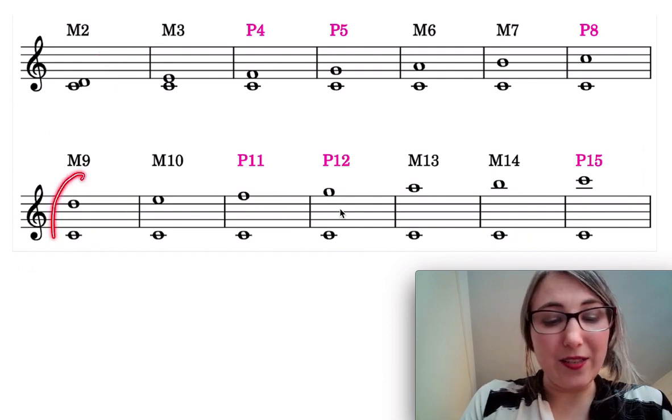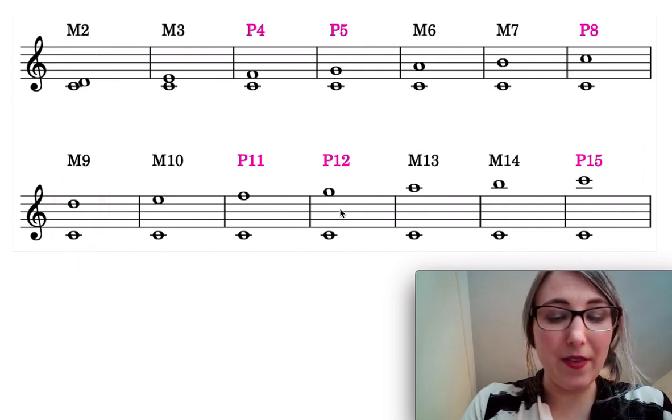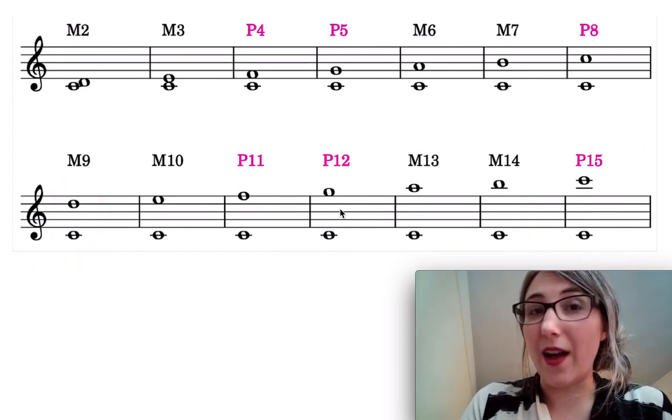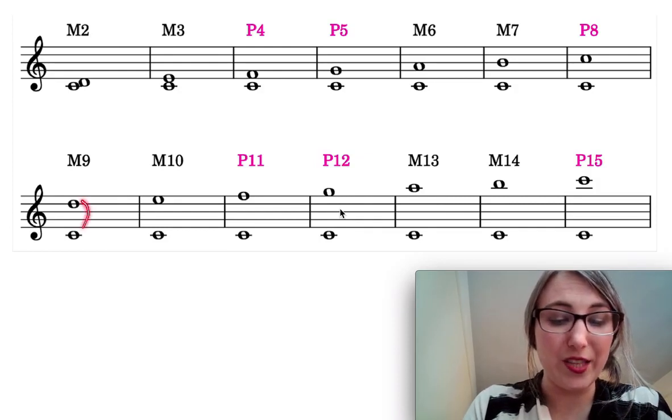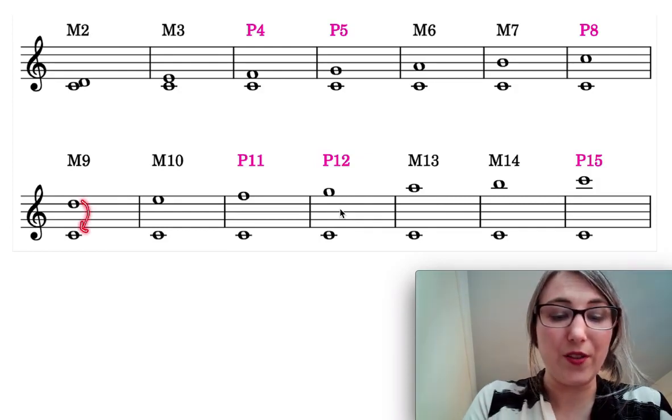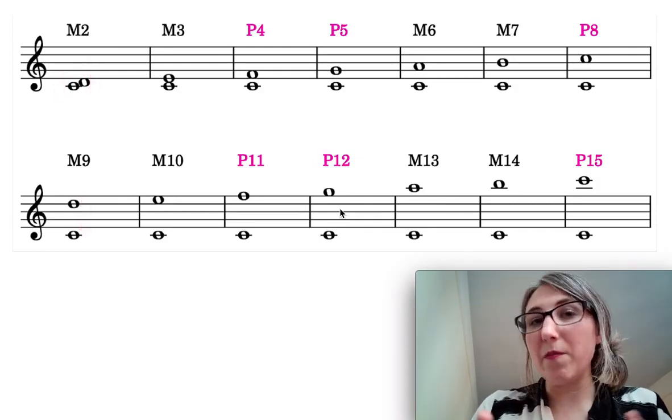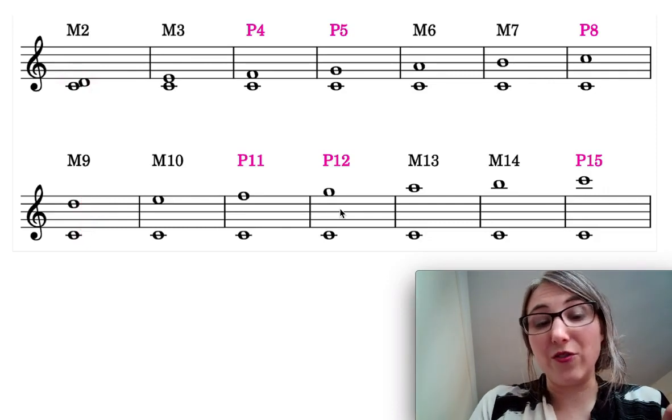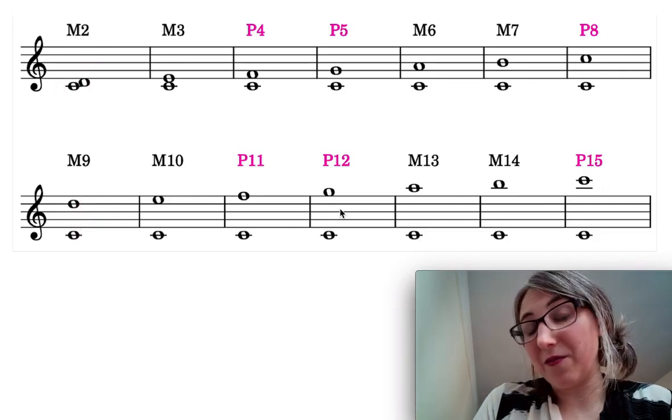So I imagine for instance if I take this interval here, the 9th, and I subtract the octave out of the interval. So I imagine sort of moving this D down here so that it looks like this. We can think of a major 9th really as being a major 2nd plus an octave, right?